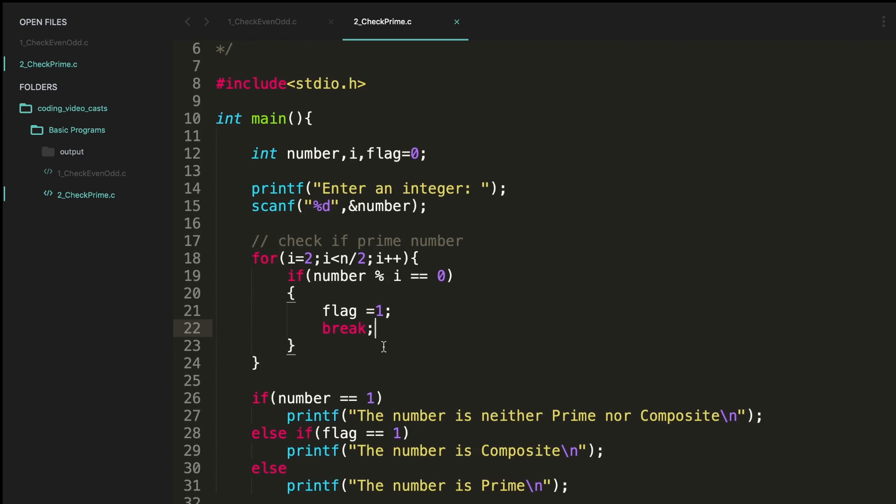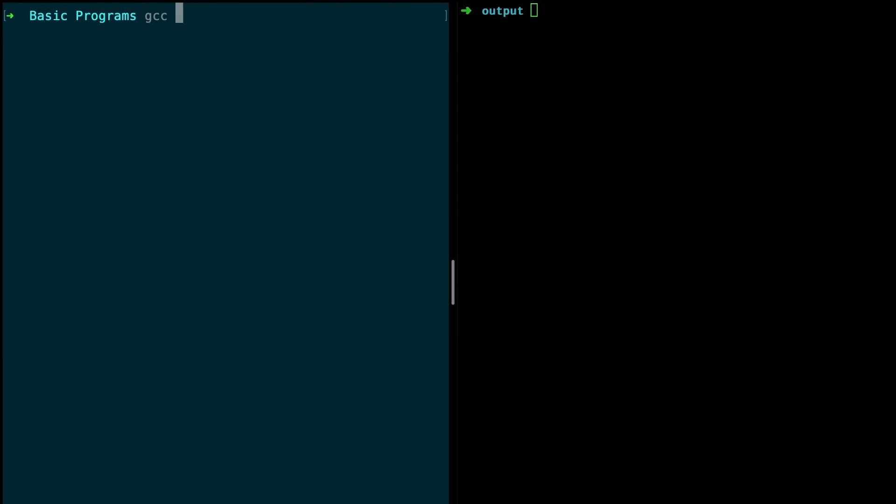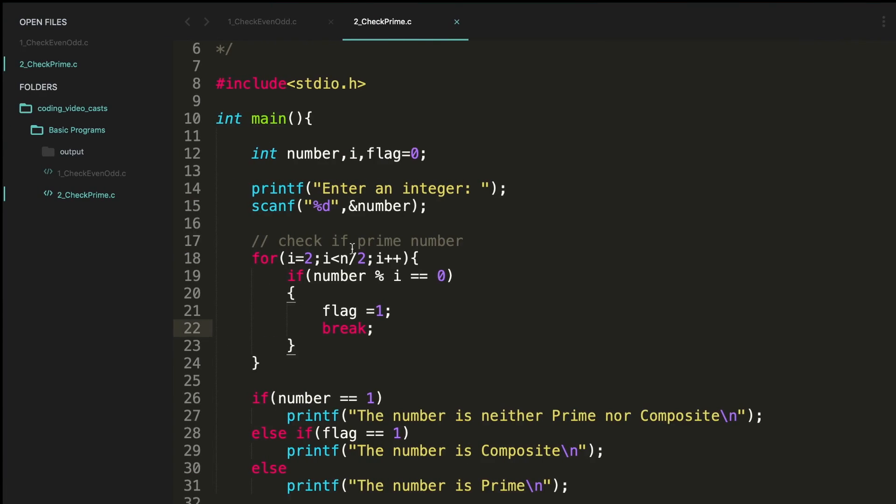All right, let's compile this. gcc, the file name is 2_CheckPrime.c minus o, we're putting into output folder. Let's give the name as two. Oh, there is an error. Yeah, it is not n, actually it is number. Okay, let's compile it again.